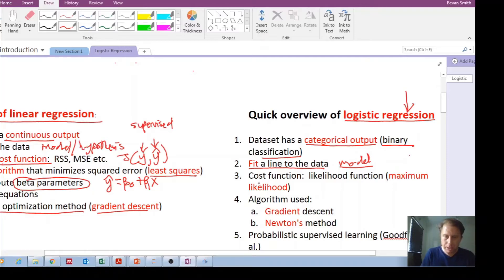Just like in linear regression, we need a cost function. We need a cost function, and this is often the likelihood function. I want you to get used to this idea of what is a likelihood function, and we use something called maximum likelihood.